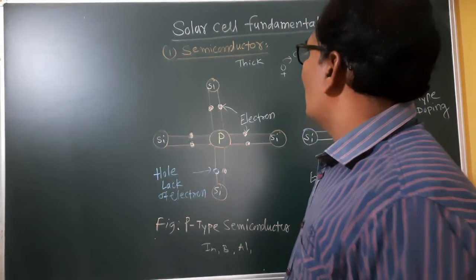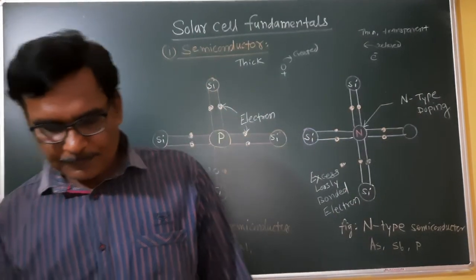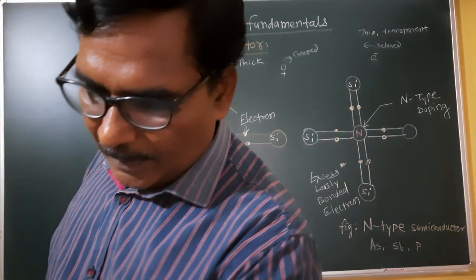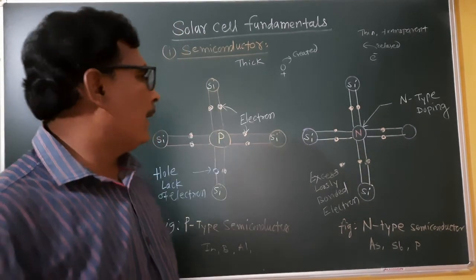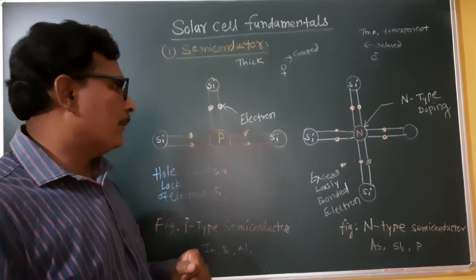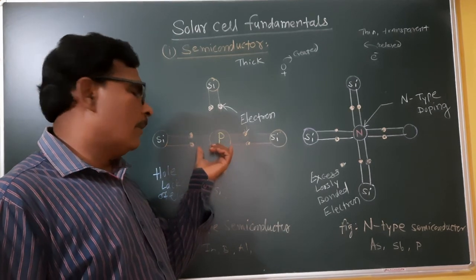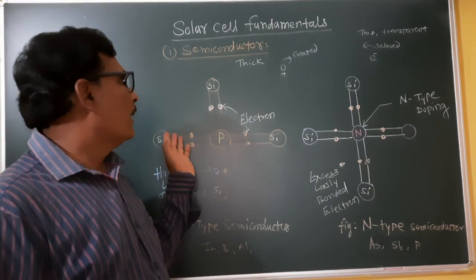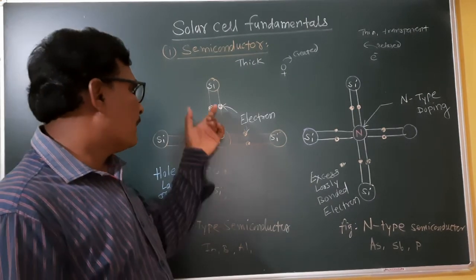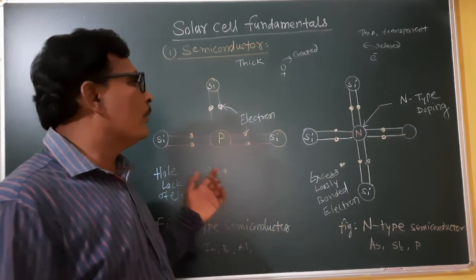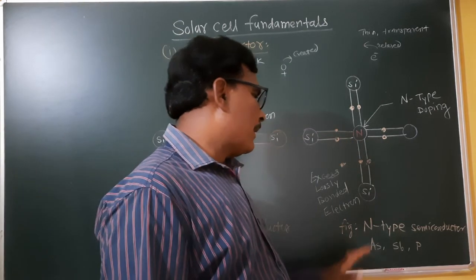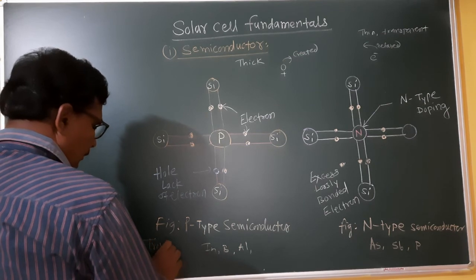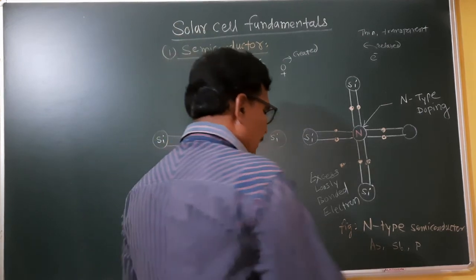In the semiconductor we consider two types based on crystal structure: P-type semiconductor and N-type semiconductor. P is positive and N is negative. P-type semiconductor uses trivalent impurities in the silicon crystal structure. Trivalent impurities like indium, boron, and aluminum are used for P-type semiconductor. For N-type semiconductor we use pentavalent impurities.